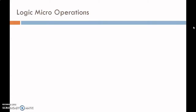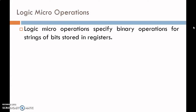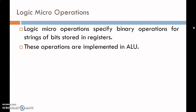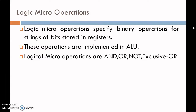Now let us start our session with Logic Micro Operations. Logic Micro Operations specify binary operations which are to be carried out on the content of registers. In this operation, each bit of a register is considered separately. Logic operations are implemented in the ALU. Basically, there are 4 main Logic Micro Operations which are AND, OR, NOT, and EXCLUSIVE OR.